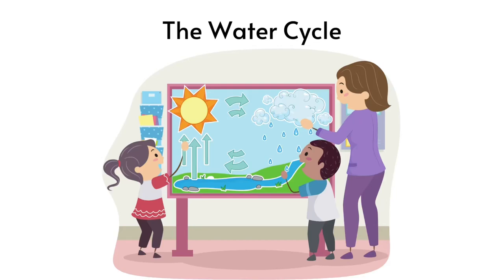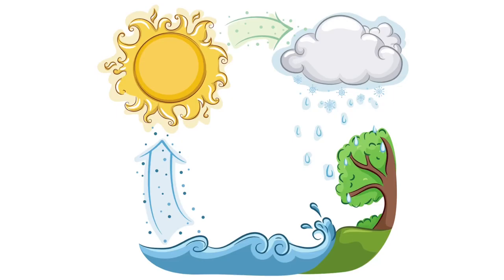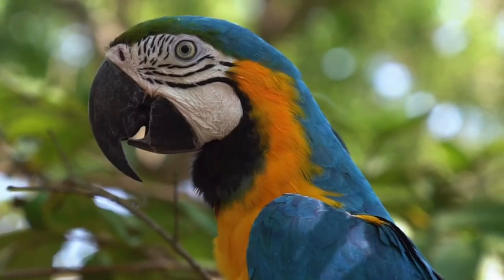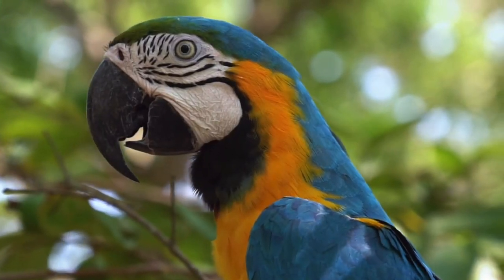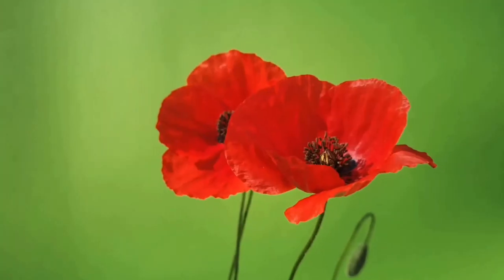The water cycle, also known as the hydrologic cycle, is the process by which water circulates between the land, oceans, and atmosphere. This cycle plays an essential role in maintaining life on Earth and is crucial for the survival of all living things.